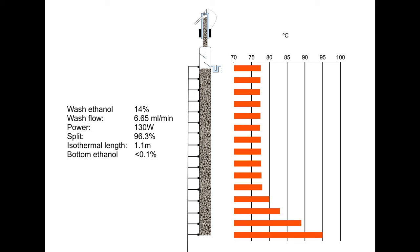If the isothermal section gets too short, we reduce the steam flow. If the bottom temperature gets too low, we increase it. The length of the isothermal section is pretty easy to measure — the temperature rises quite quickly below it, so you don't have to be that precise in temperature measurements.